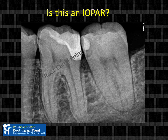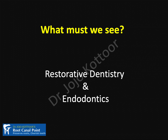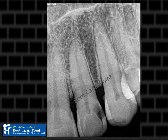What we require instead is an IOPA, or intraoral periapical radiograph. To be called an IOPA, it must show at least 5mm of the periapex. If the periapex is missing, it has no diagnostic value. In a restorative and endodontic context, the clinician must see the lamina dura and periodontal ligament space on the radiograph.